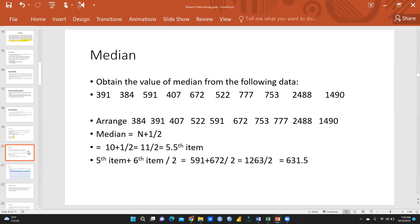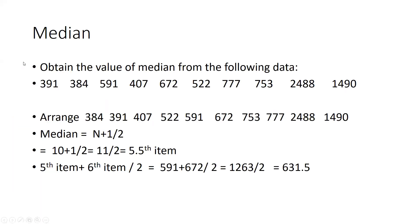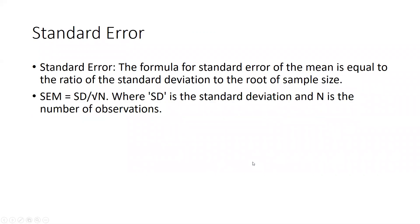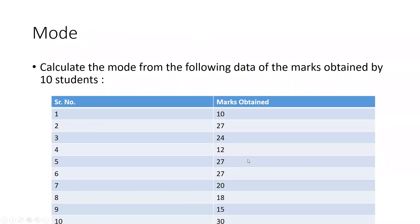Mode means the value with the maximum repetitive frequency. For example, in this data, 27 appears three times — so the number with the highest frequency is the mode.